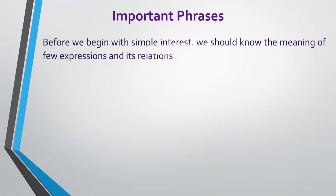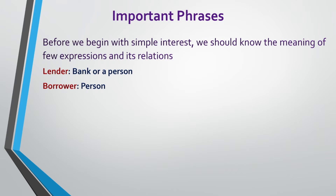Important phrases. Before we begin with simple interest, we should know the meaning of key expressions and their relations. A lender is someone who gives money to another person — for example, a bank or a person. A borrower is someone who borrows money from another person. The principal is the amount that the borrower has borrowed from the lender. It is usually denoted as capital P. For example, the principal amount could be rupees 10,000, 20,000, lakhs, or even crores.